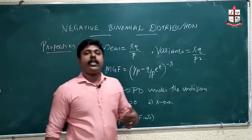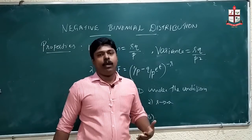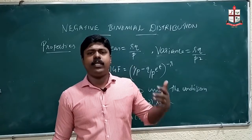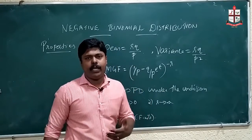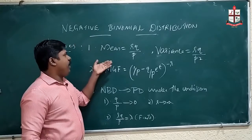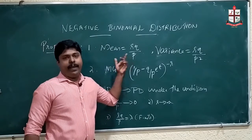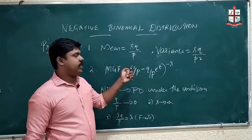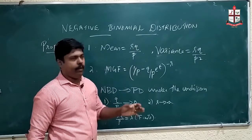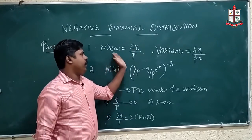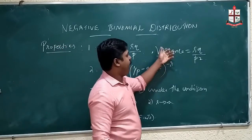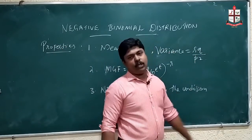We will discuss the properties of the negative binomial distribution. We will not derive the mean or variance. For negative binomial distribution with parameters r and p, where r is the number of successes, p is the probability of success, and q is the probability of failure: the mean is rq/p and the variance is rq/p².